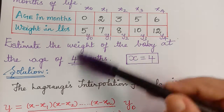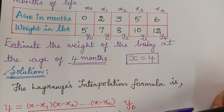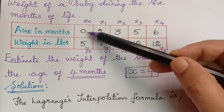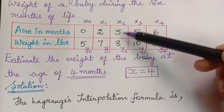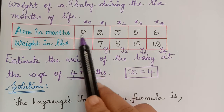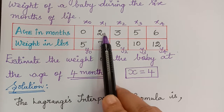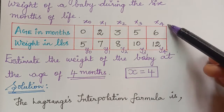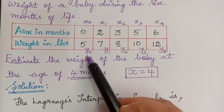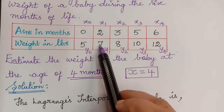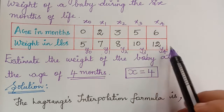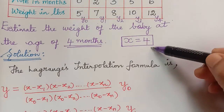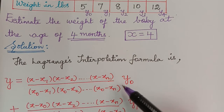Now let us solve this problem using Lagrange's interpolation formula. As the first step we have marked the values: x0 is 0, x1 is equal to 2, x3 is 5, and x4 is 6. Similarly, y0 is 5, y1 is 7, y2 is 8, y3 is 10, and y4 is 12, and x is equal to 4. Now all these values we have to substitute in this formula.